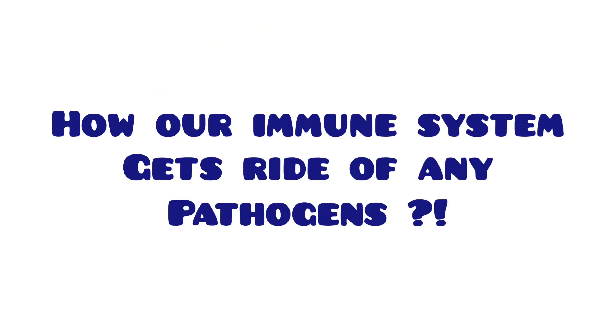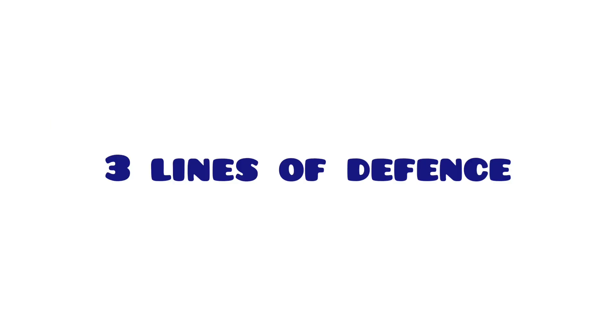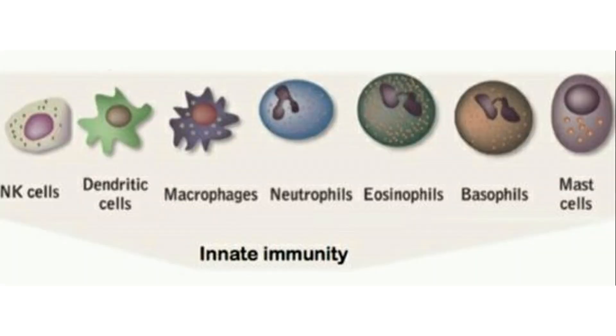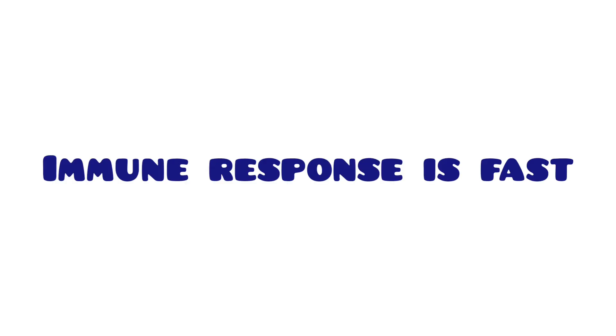Now let's talk in detail about how our immune system gets rid of any pathogen. Our immune system has three lines of defense. The first and second lines are called the innate immune response, and the third line is called the adaptive immune response. The first line of defense is the physical barrier that prevents pathogens from entering — such as the skin, hairs, nose, and cilia of the airways. The second line consists of cells that attack foreign substances that pass the first line. The innate immune response is very fast — minutes to hours — but cannot make memory.